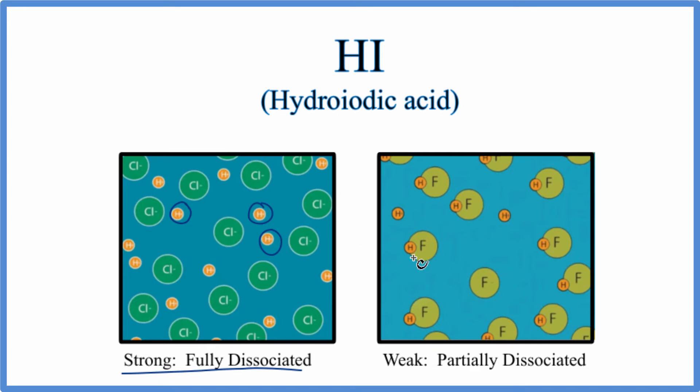If it were a weak acid like HF, we'd have some of these hydrogen ions here dissociated, but most of them would still be bonded there to the fluorine. So a weak acid, it's only partially dissociated.